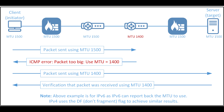When there are a series of links along the path, each with increasingly smaller MTUs, the above process may take place several times before the sender finally determines the minimum value of the path MTU. Once the path MTU has been found, all packets are sent segmented to this new value.